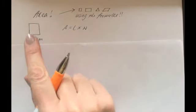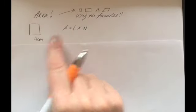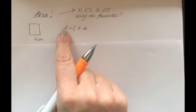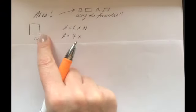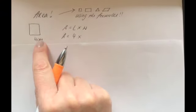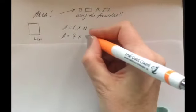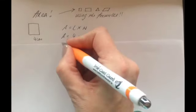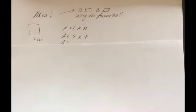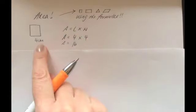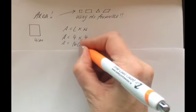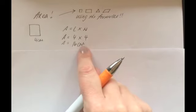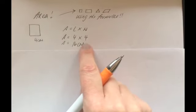So this is our square and there is our formula. We don't know what the area is — that's what we're looking for — but we do know the length is four, and the width, although not given, is the same in a square, so it's four times four. The area of this square is 16 — and don't forget your units: centimeter times centimeter is centimeters squared. Any area is always going to be a squared unit.